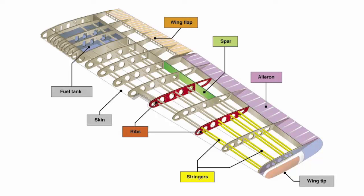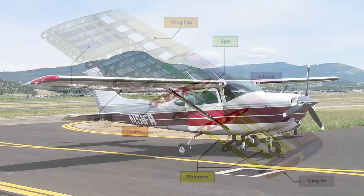Wings are airfoils normally attached to each side of the fuselage and are the main lifting surfaces that support the airplane in flight. There are numerous wing designs, sizes, and shapes used by aircraft manufacturers. Each design fulfills a certain need with respect to the performance required of the airplane. We will discuss how the wing produces lift in a later video all about aerodynamics.